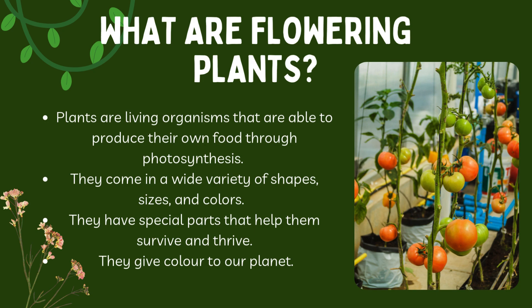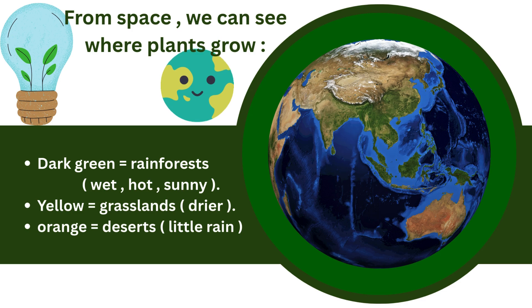Plants are living organisms that are able to produce their own food through photosynthesis, and they come in a wide variety of shapes, sizes, and colors. They have special parts that help them to survive and thrive. They give color to our planet — from space we can see where plants grow.